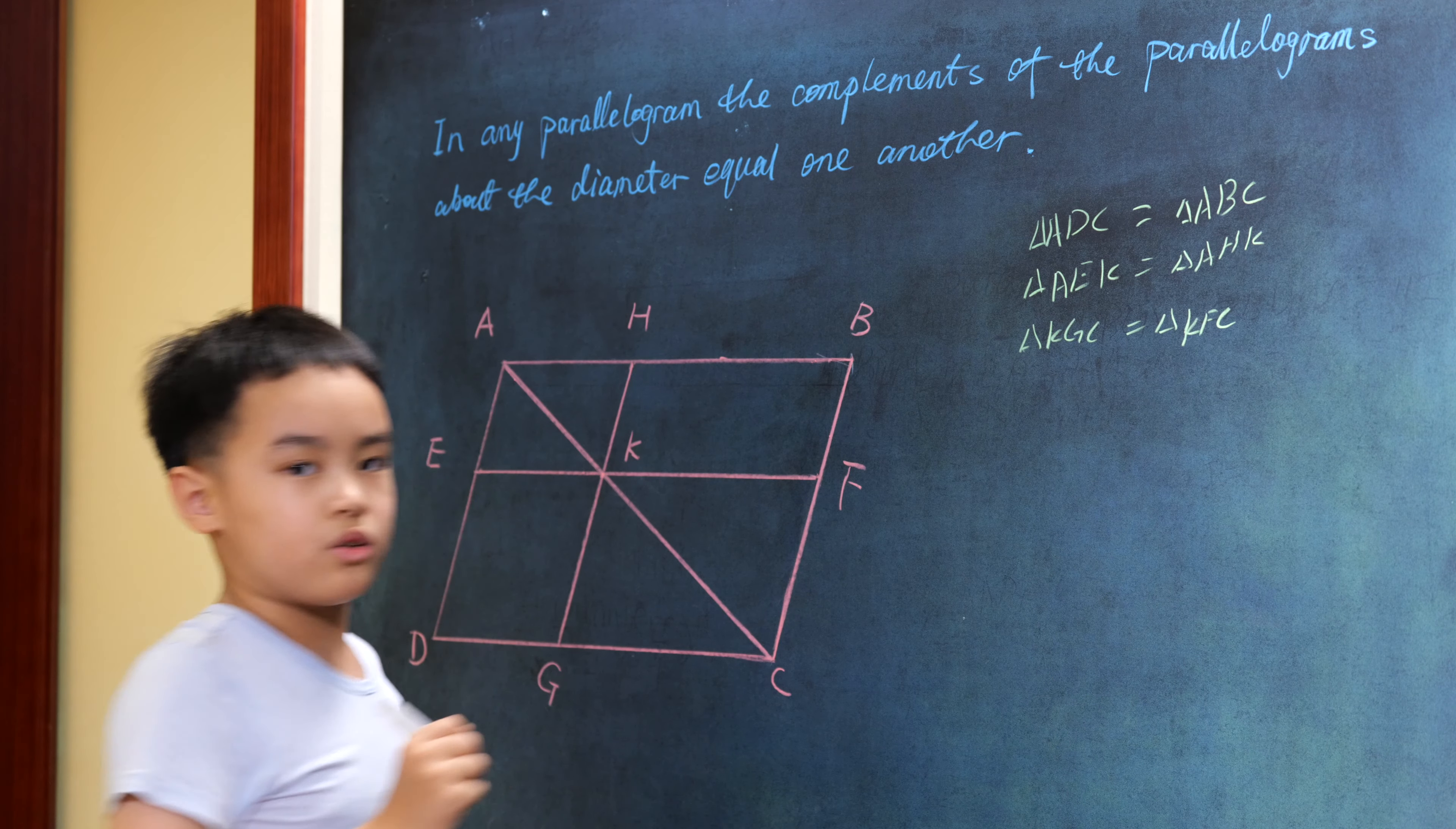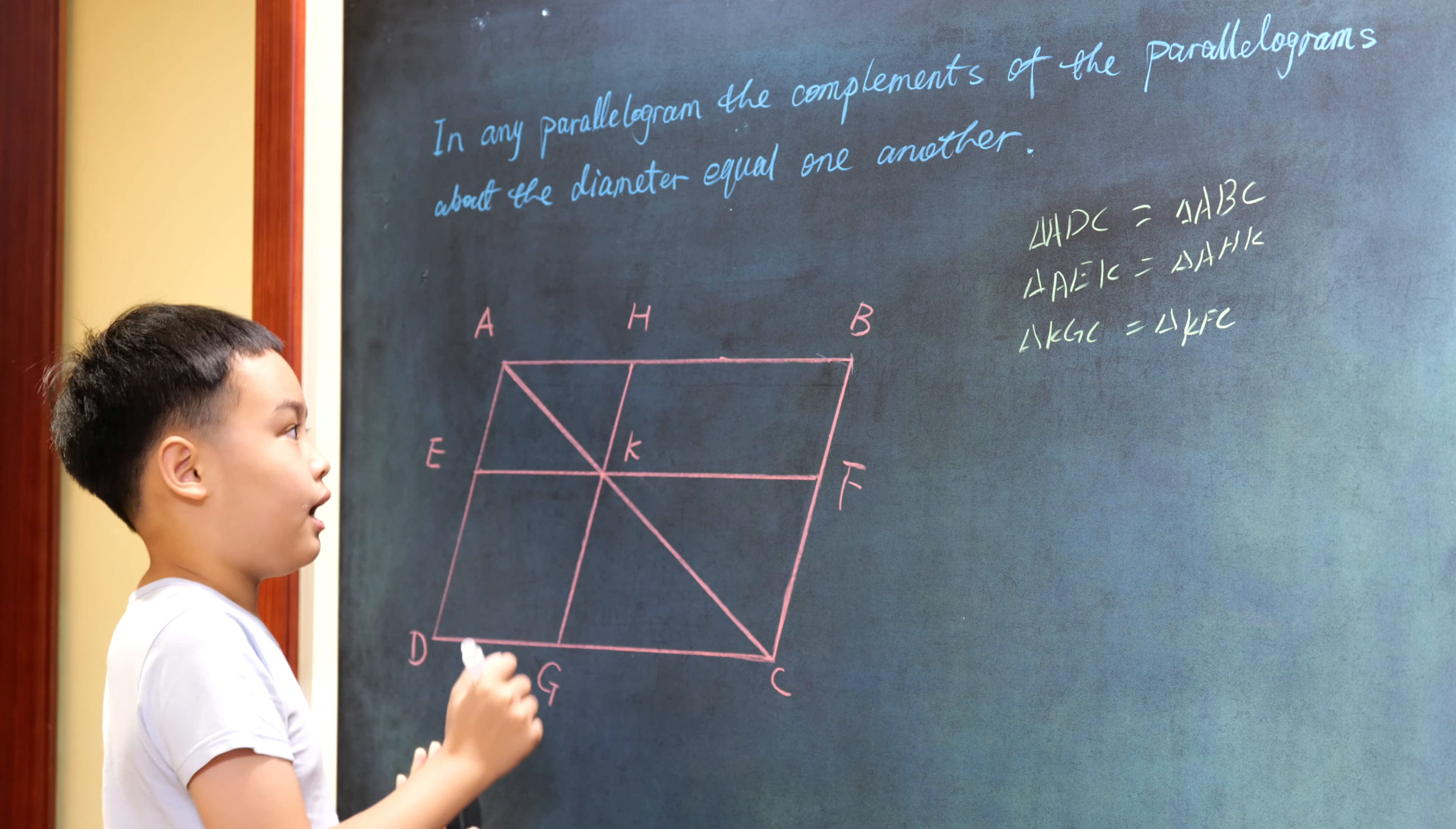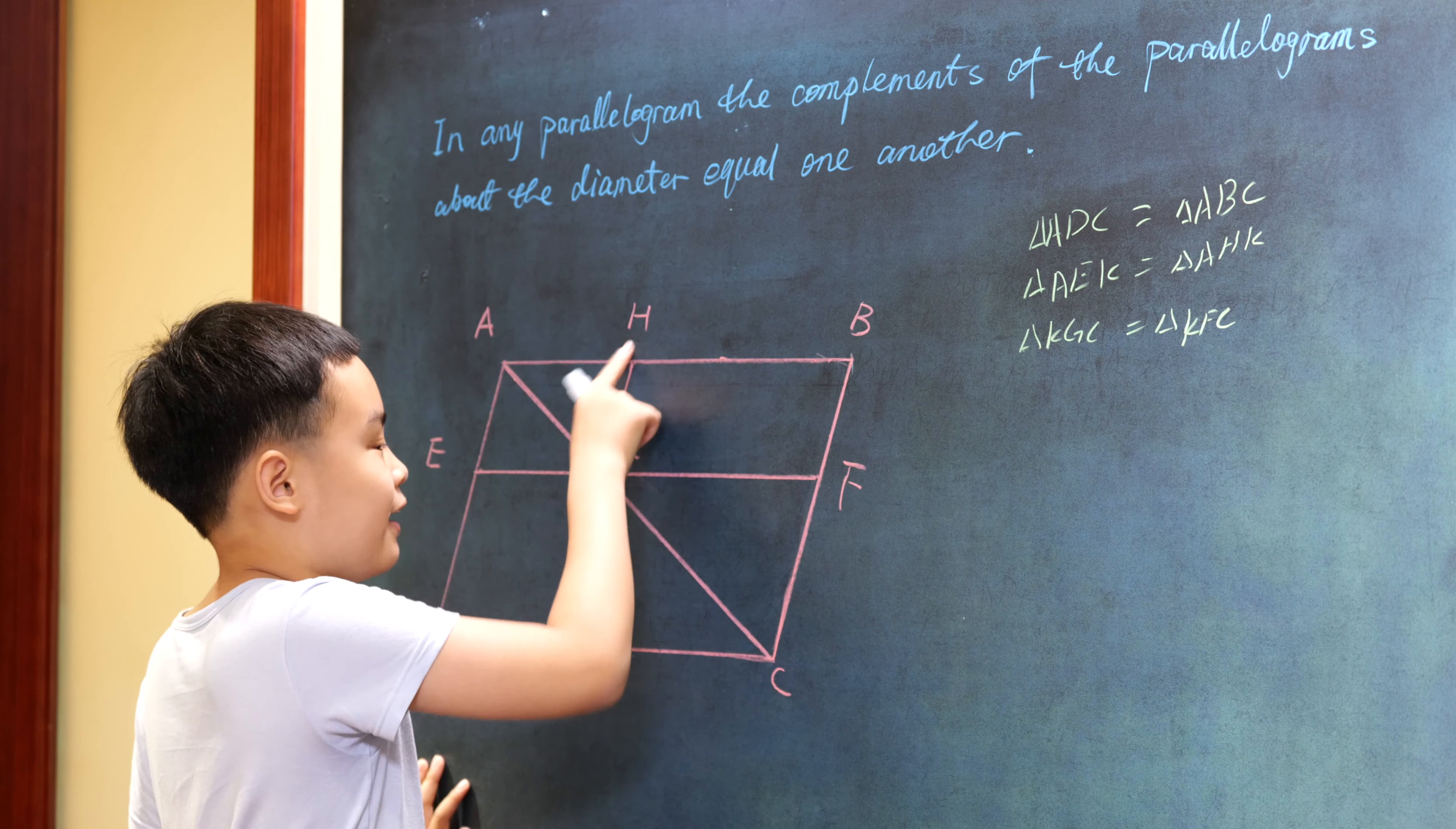But triangle ADC is made by three shapes: ADK, EDGK, and KGC. And triangle ABC is made by AHK, KFC, and HKFB.